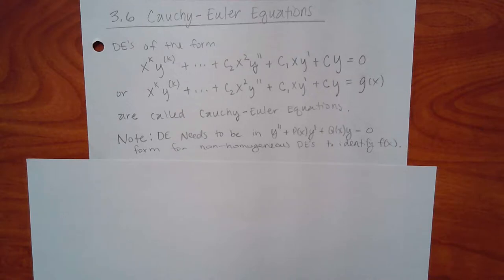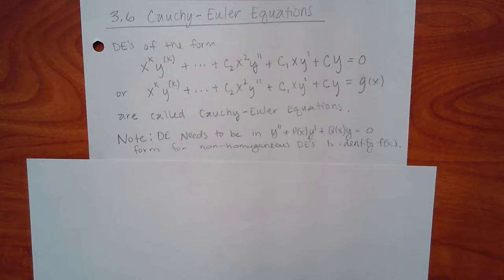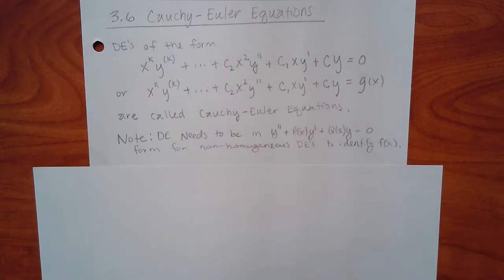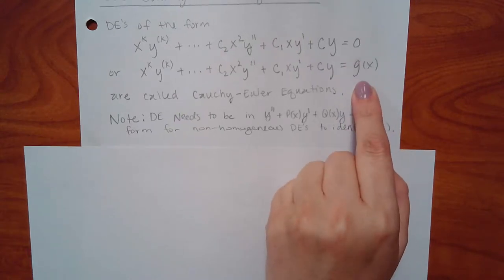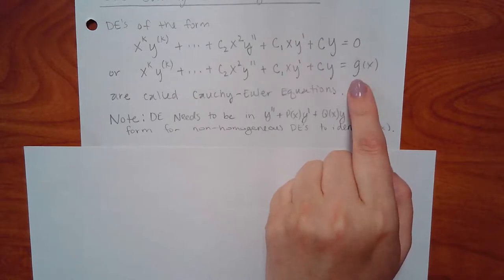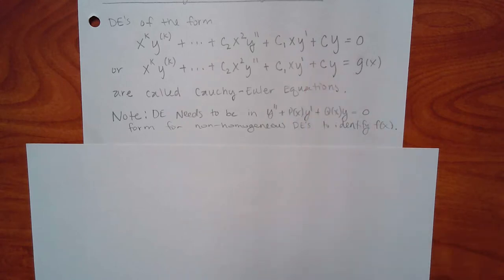If it doesn't match, it may be possible to manipulate it so that it does. If not, you'd need a whole other technique, but we won't see those problems here. Our equations are either going to be in Cauchy-Euler form or we'll be able to manipulate them into that form — either homogeneous or non-homogeneous.